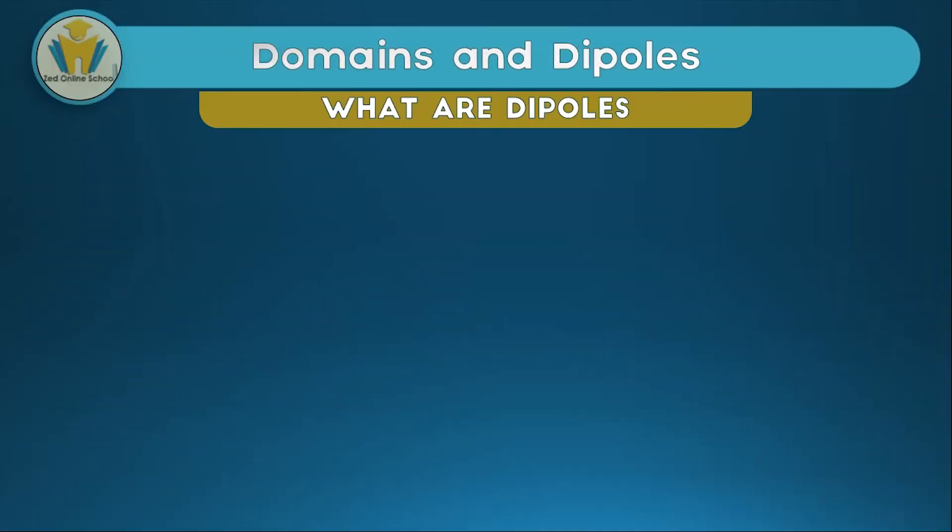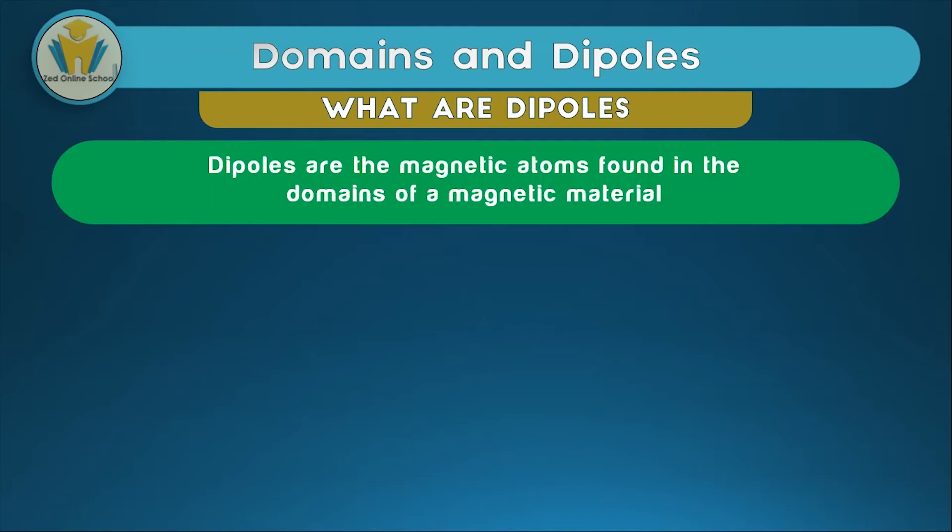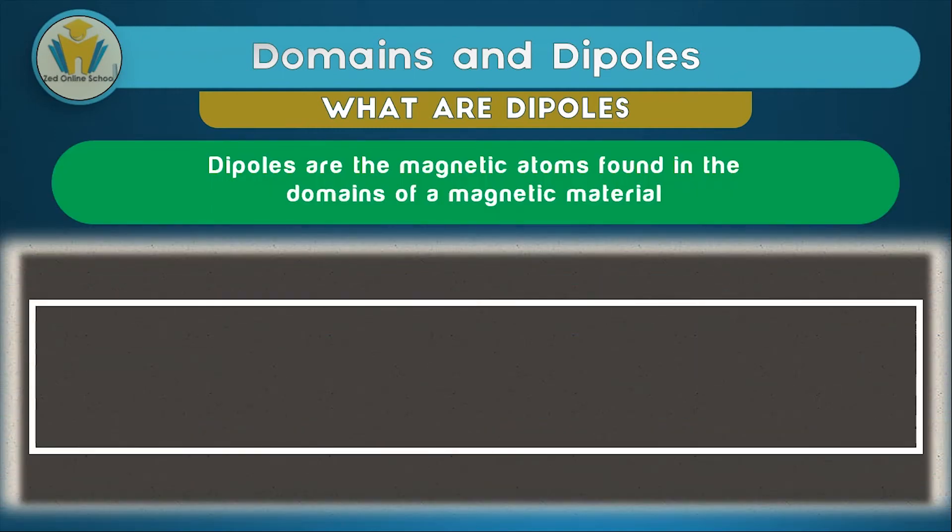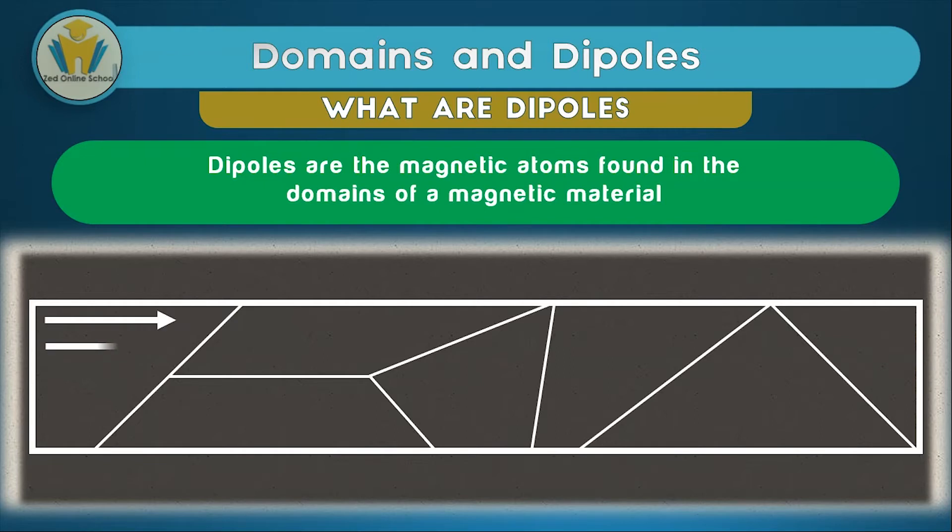Dipoles are simply those atoms with a magnetic direction in a magnet. Most commonly you can think of them as tiny magnets in a magnet. If we illustrate this in a diagram, we'll have our domains, the regions where these dipoles are found, and then we'll have our dipoles pointing in a particular direction.